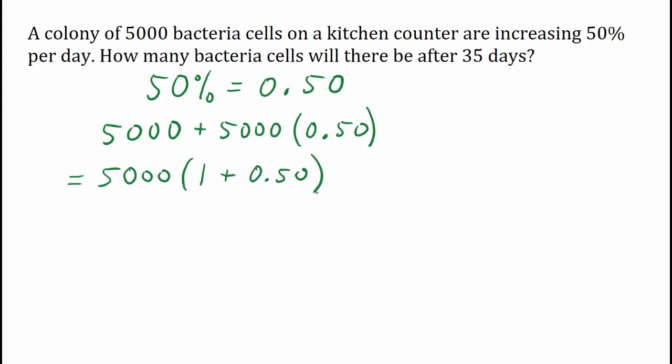We can simplify this. And we see that after one day, there are 7,500 cells. But we want to figure out how many bacteria cells there are after 35 days. Let's take a look at this expression that we have.